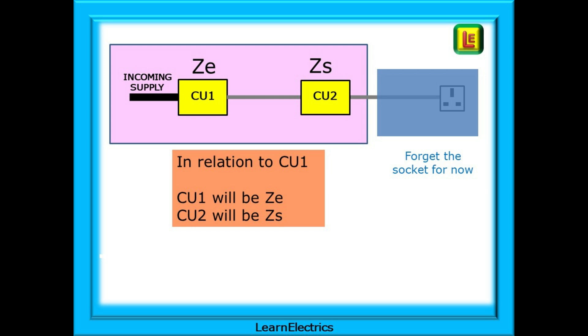This slide shows this in very simple blocks. Just for CU1 we will record the ZE measurement and for CU2 we measure and record a ZS. Forget the socket that comes off CU2 for now, that is nothing to do with CU1 paperwork.